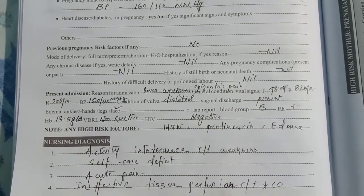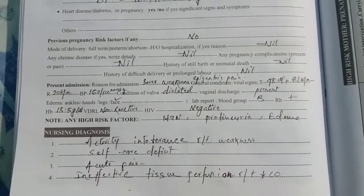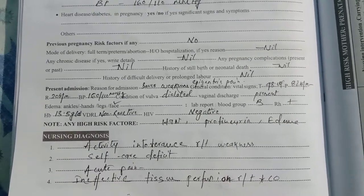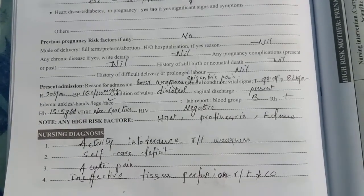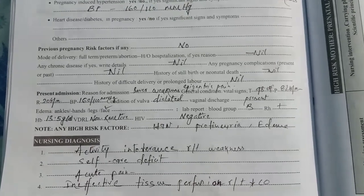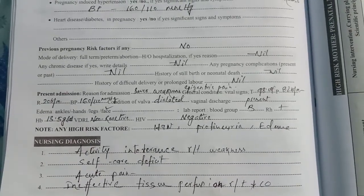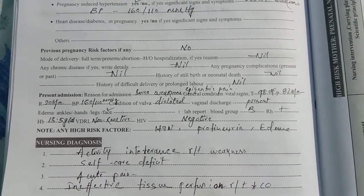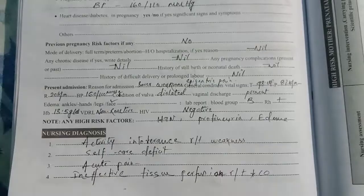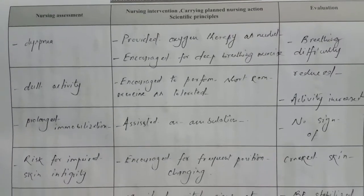Here the high-risk condition is HTN, or pregnancy-induced hypertension, proteinuria, and edema — you can say it as preeclampsia.